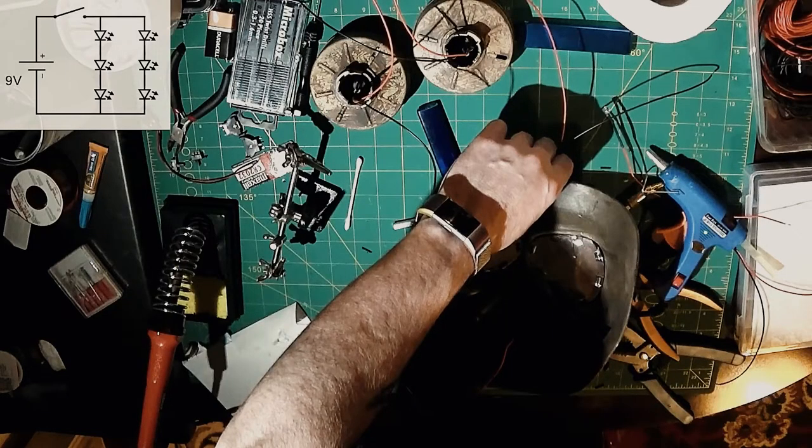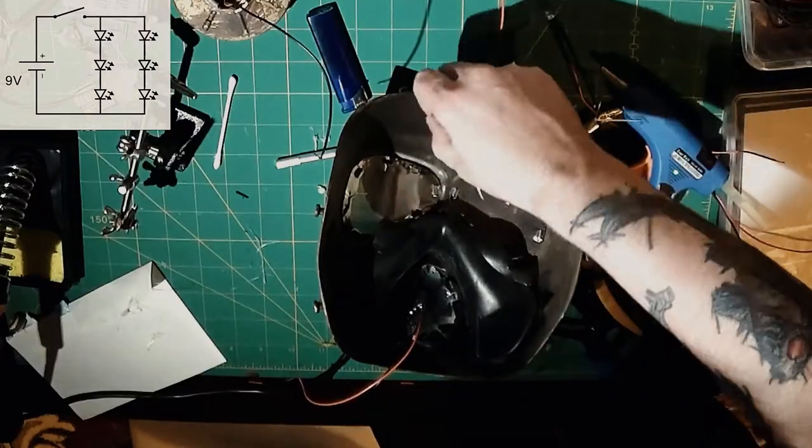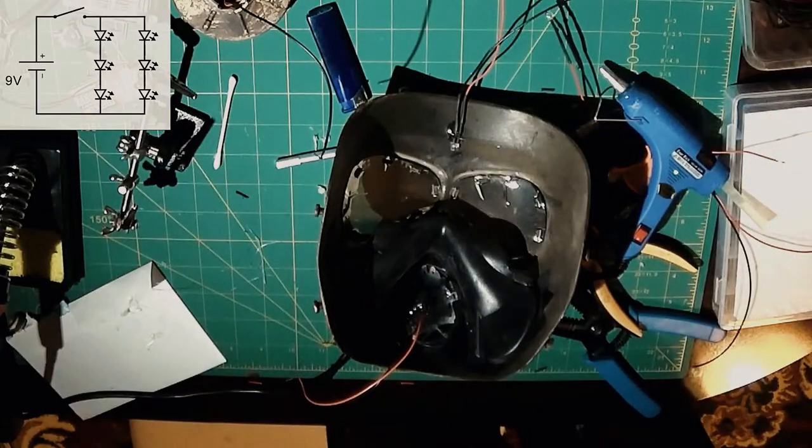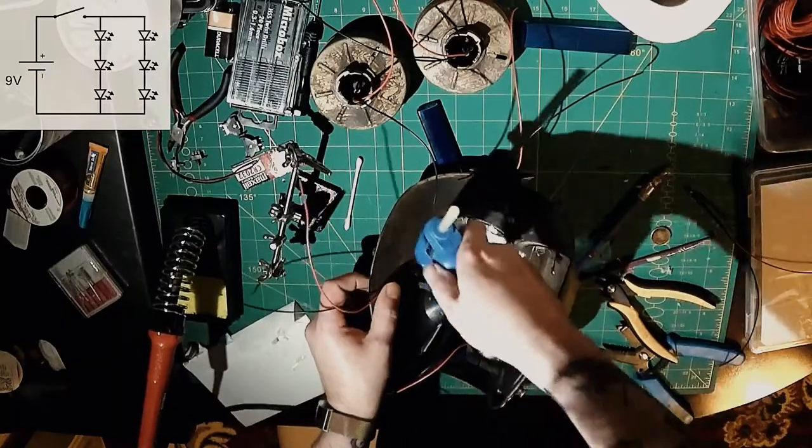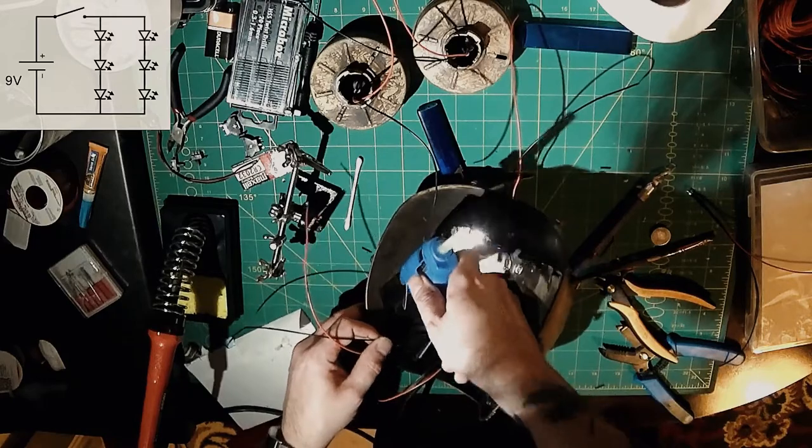So it works out a nine volt battery will power these lights for around about 14 hours continuous if that was to be switched on continuously. So I think that's ample.